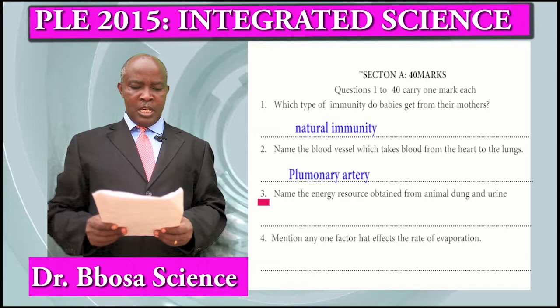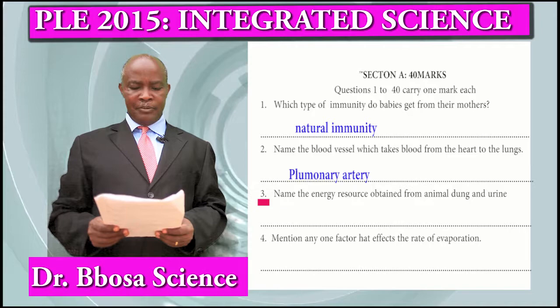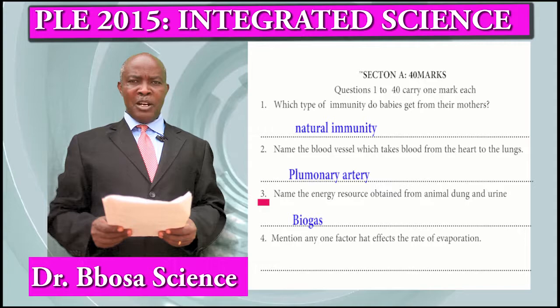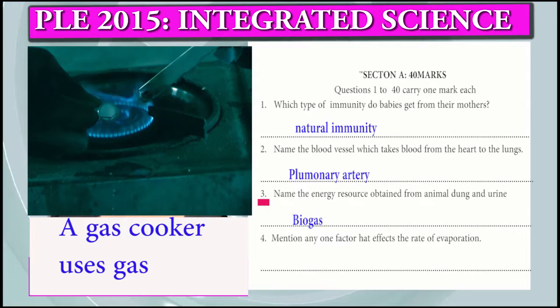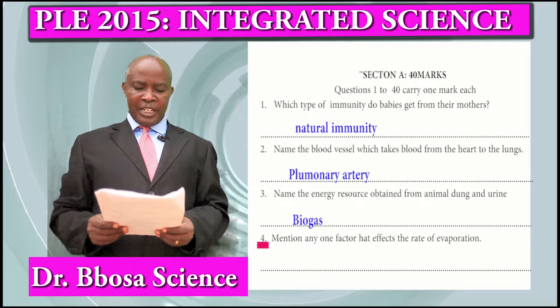Question 3: Name the energy source obtained from animal milk and urine. That is biogas. The major component of biogas is methane. Methane is used in basin burners and gas cookers.